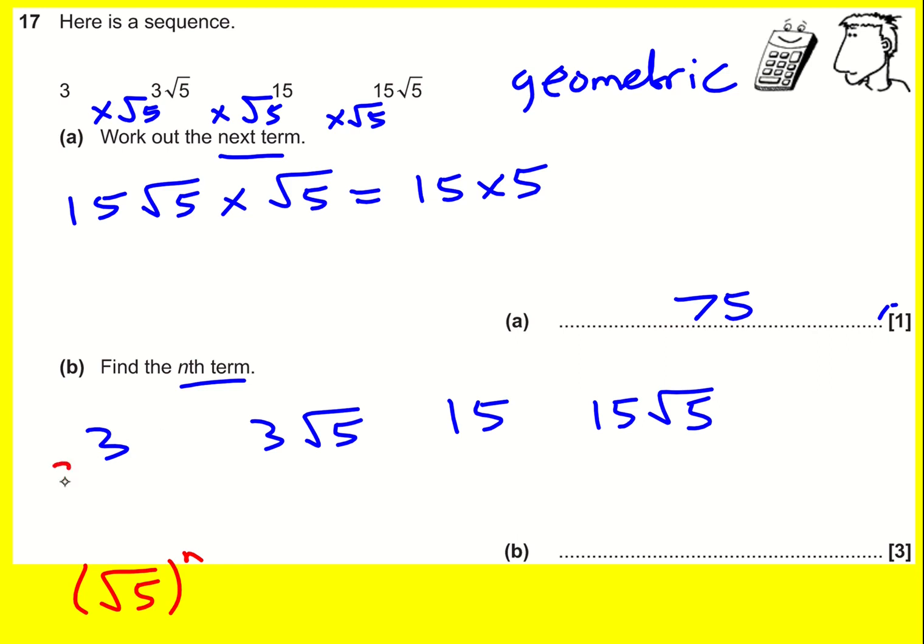I'm going to imagine that this is something times root 5, and then I'm timesing by root 5, so this is going to be something times root 5 squared because I'm timesing by root 5 another time. And then this is going to be something times root 5 cubed, and that's the third term.